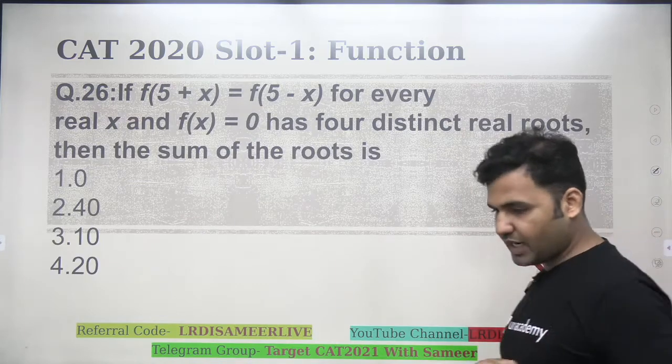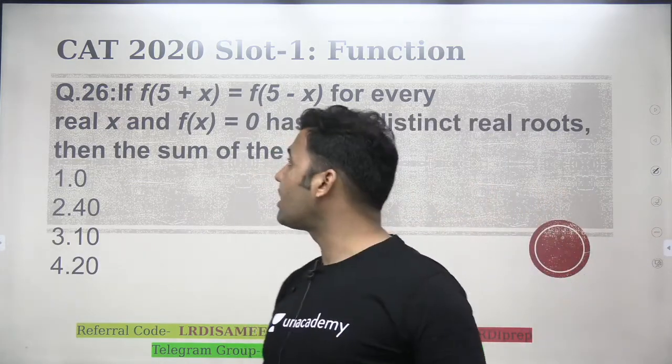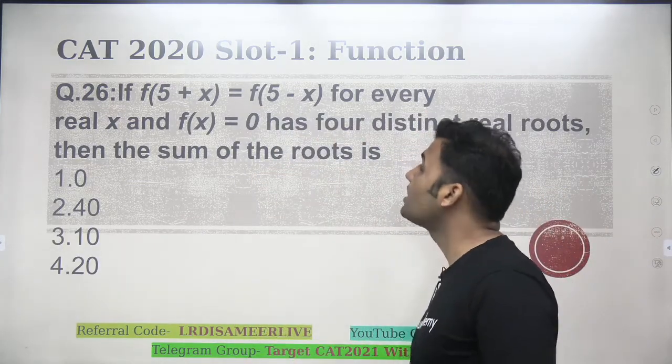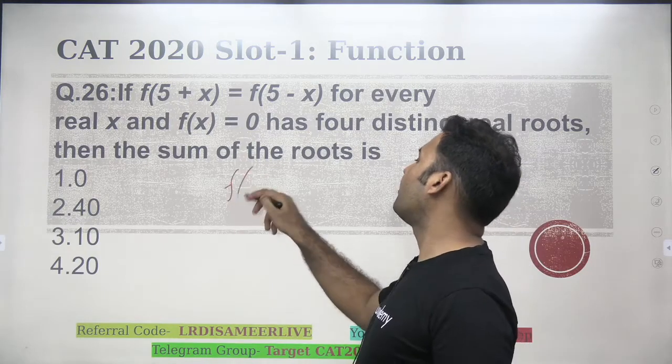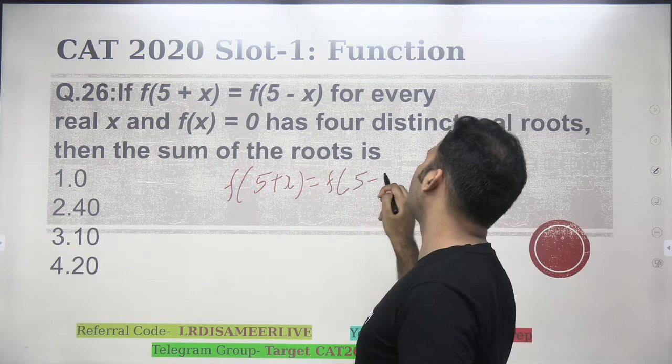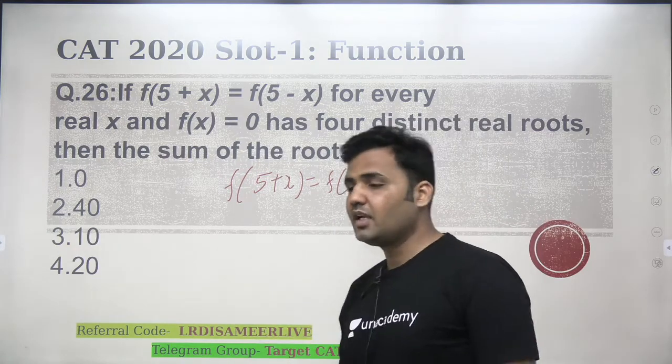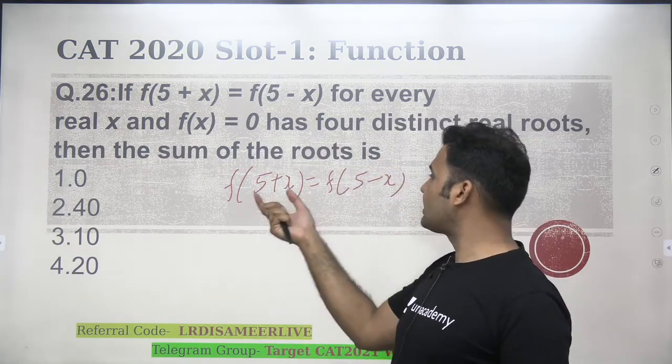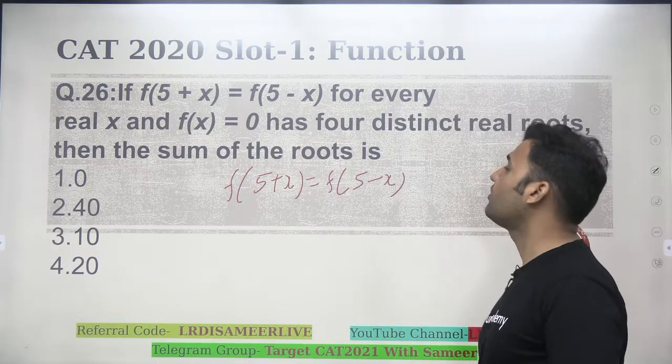One more question, the last question of CAT 2020 slot 1, and with this we are done with CAT 2020 slot 1 questions. It says f of 5 plus x is equal to f of 5 minus x, a kind of function that shows that the value of f of 5 plus x is same as value of f of 5 minus x.